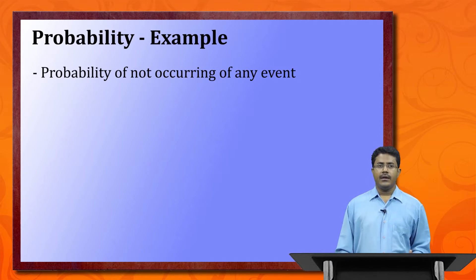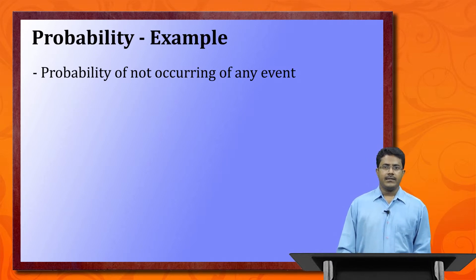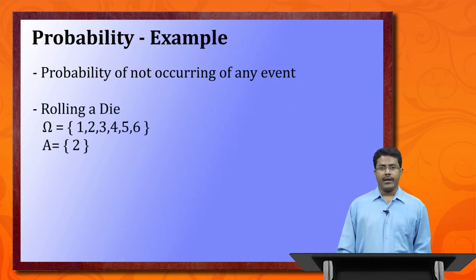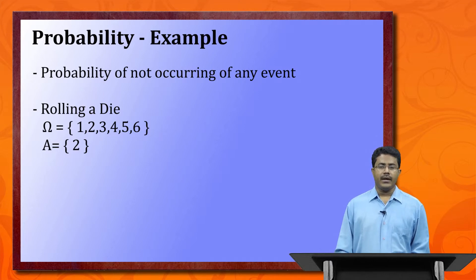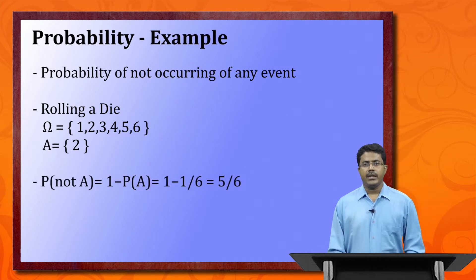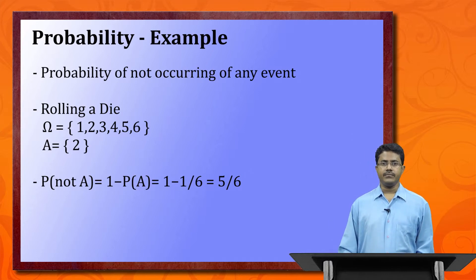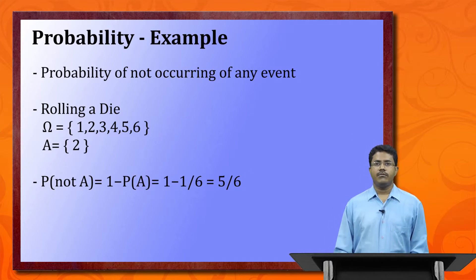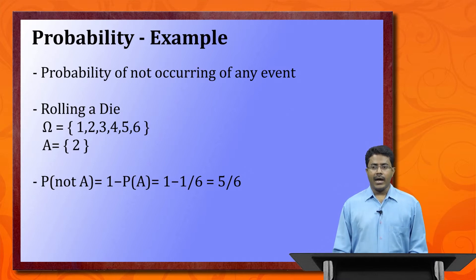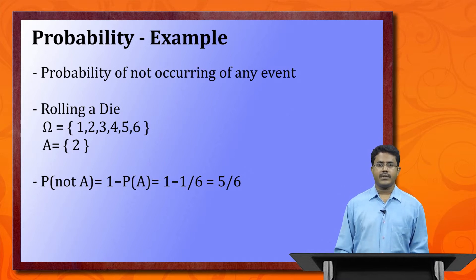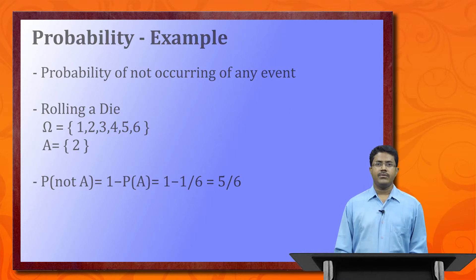Now, how do we calculate the probability of an event NOT occurring? For example, rolling a die and not wanting to get 2. P(not A) = 1 − P(A) = 1 − 1/6 = 5/6. In this way, the probability of any event not happening can be calculated.